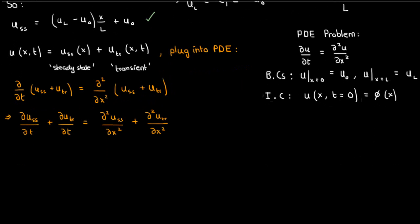Now we know that the time derivative of u_ss is 0 because u_ss corresponds to the steady state time independent solution. We also know that its second derivative with respect to x is 0 because that's the equation we originally solved to get u_ss. All we're left with is a PDE just for the transient solution, which is the exact same PDE we had for u.